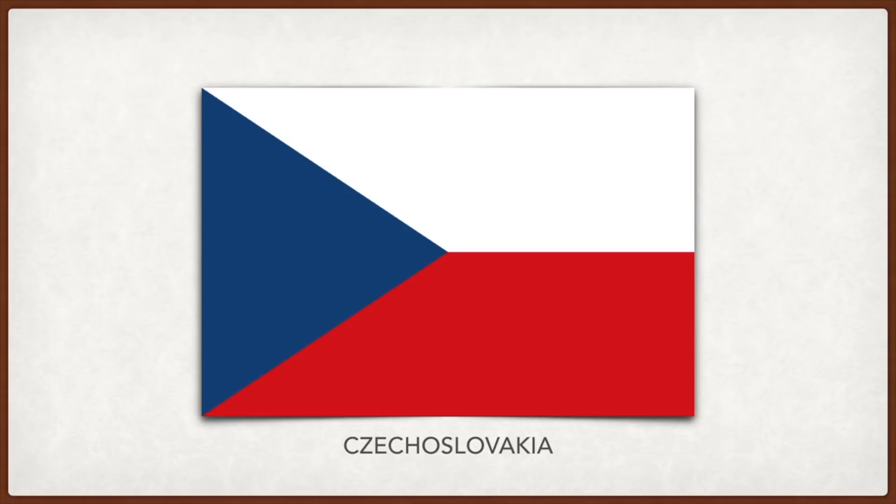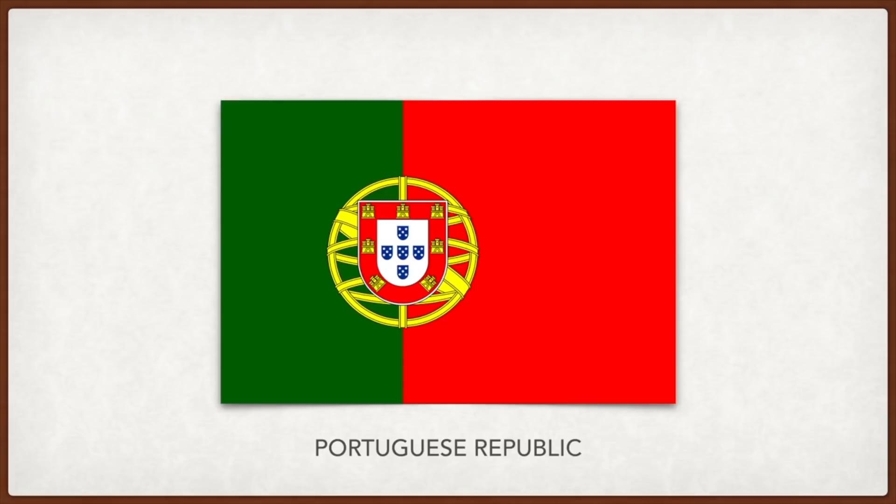Portugal: the green represents hope and red the blood of those who died for the country. The yellow armillary sphere was an important navigational tool for Portuguese sailors during the age of discovery. On top of that is the shield, and inside are five small blue shields in the shape of a cross representing the five holy wounds of Christ. The seven yellow castles have been considered a symbol of Portuguese victories over the Moorish enemies.